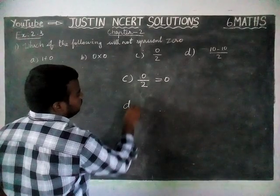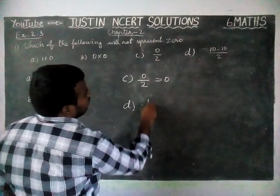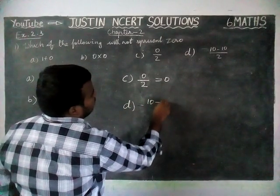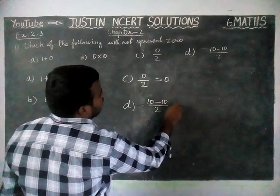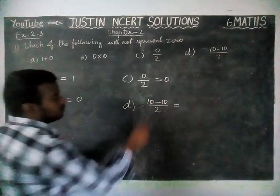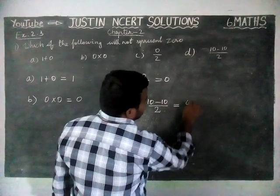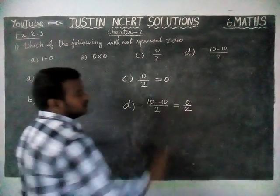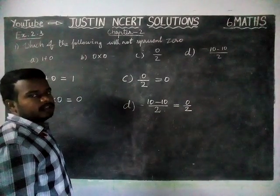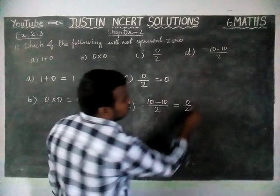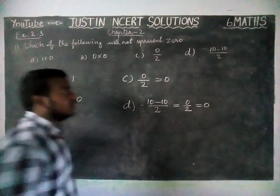Option D: 10 minus 10 divided by 2 is equal to — subtracting 10 minus 10 gives 0, so we have 0 divided by 2. Since the numerator is 0, the answer is 0.